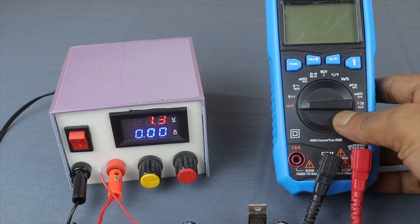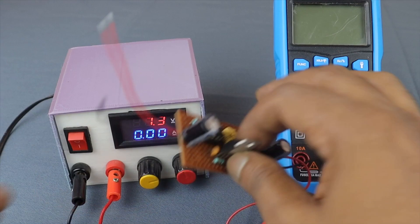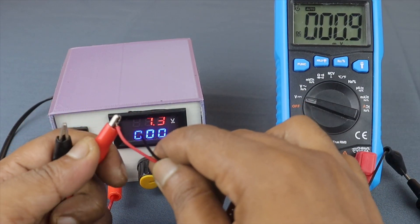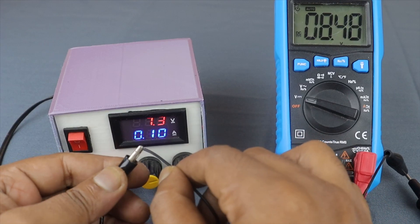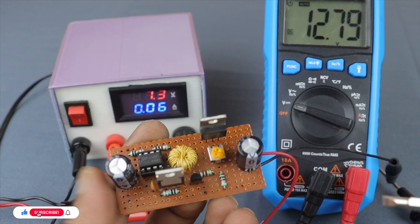Now connecting the circuit to a power supply. You can see the voltage is around 7V. Let's find how much voltage we can get at the output. You can see the output is around 12V. Let's increase the voltage.